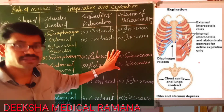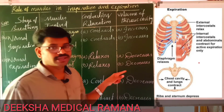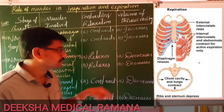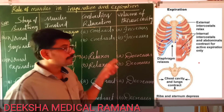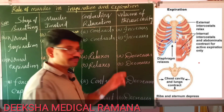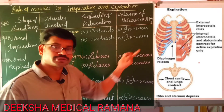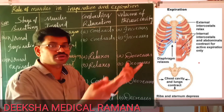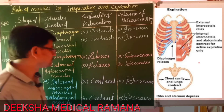The volume of the thoracic cavity decreases. Whenever the volume of the thoracic cavity decreases, the pulmonary volume also decreases. Whenever the volume decreases, pressure increases. So the pressure within the lungs — intrapulmonary pressure — is more than the atmospheric pressure, resulting in expulsion of air from the lungs to atmosphere.